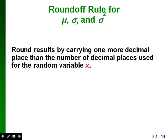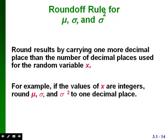The round-off rule for the mean, variance, and standard deviation is the same as before: round results to one more decimal place than the number of decimal places used for your x values. For example, if the values of x are integers or whole numbers, round your statistics to one decimal place.